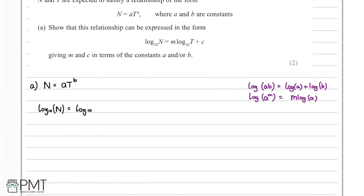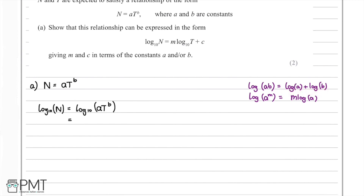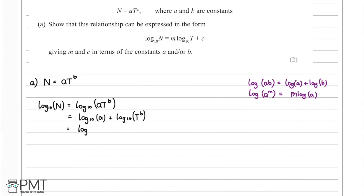We can split this up using our log laws. Recalling that log(ab) equals log(a) plus log(b), this becomes log₁₀(a) plus log₁₀(t to the power of b). Then using the second log law — log(a to the power of m) equals m·log(a) — we bring the exponent b in front of the log term, giving log₁₀(a) plus b·log₁₀(t).